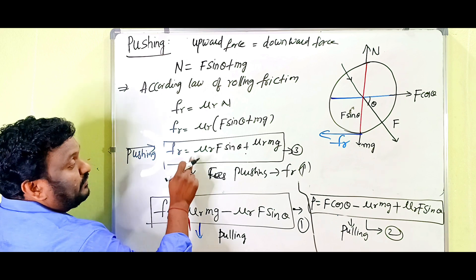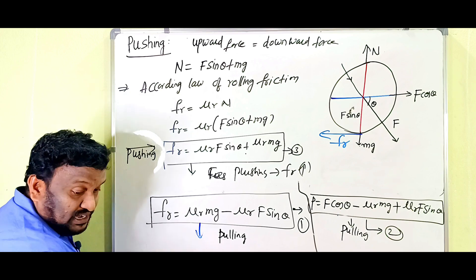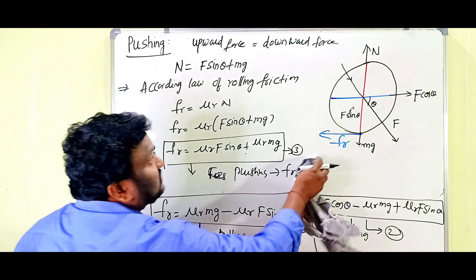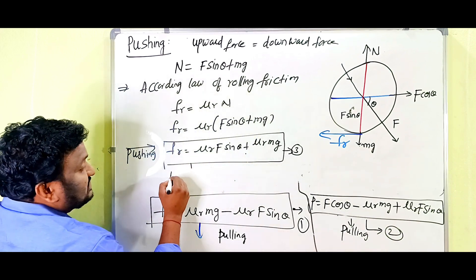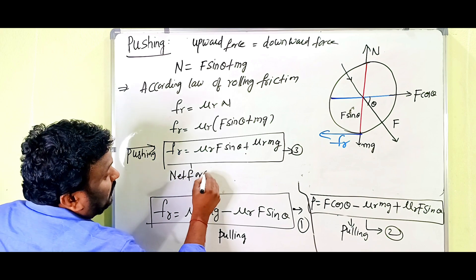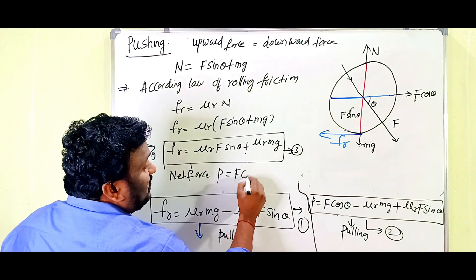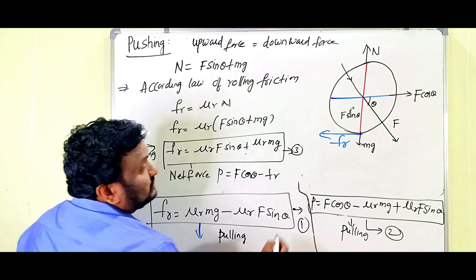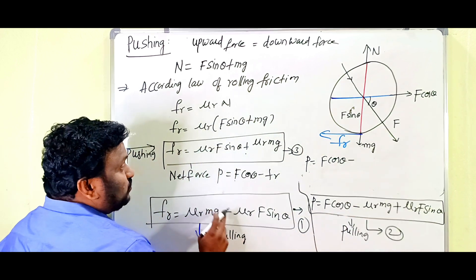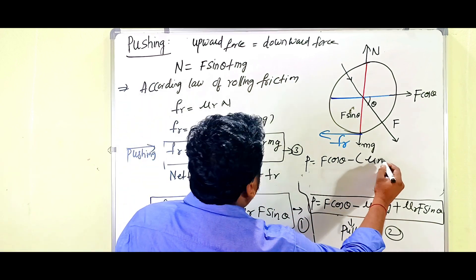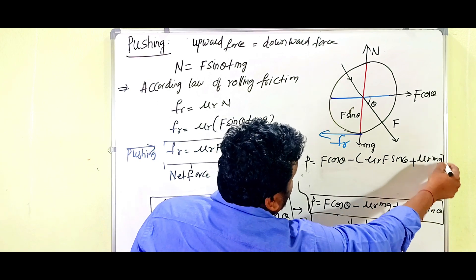We can also compare the net force. For pushing: P equals F cos theta minus F_R, and substituting F_R gives P equals F cos theta minus mu_R·F sin theta minus mu_R·Mg. Comparing with the pulling net force equation, the net force required is greater when pushing, further confirming that pulling is preferred.